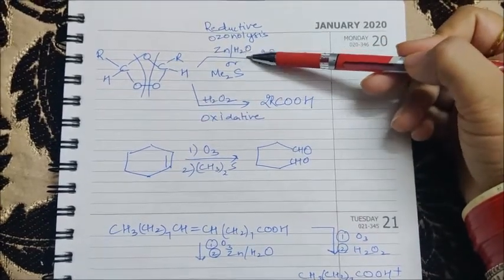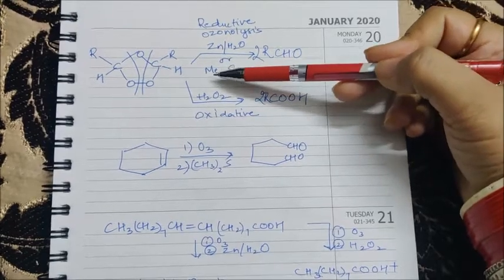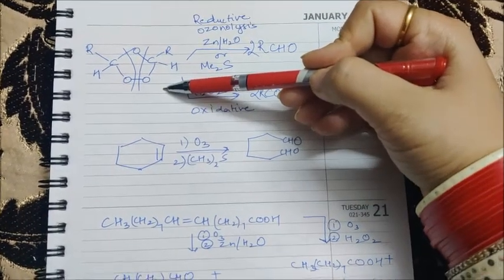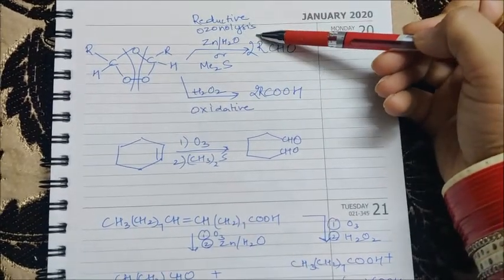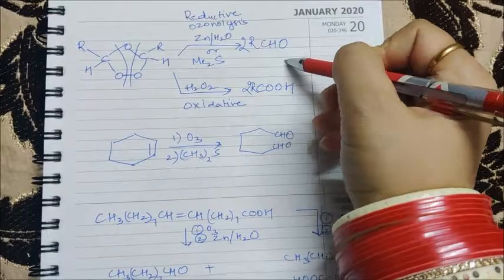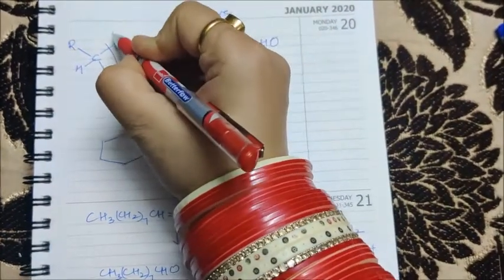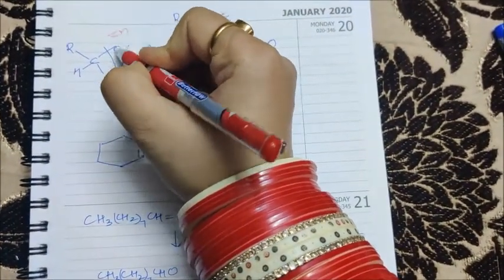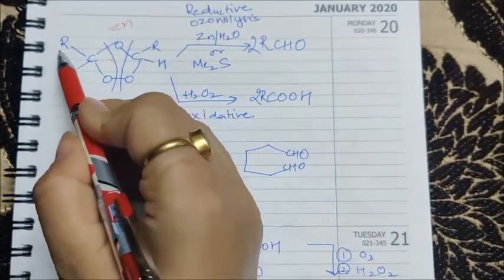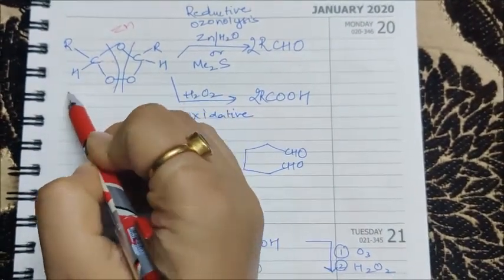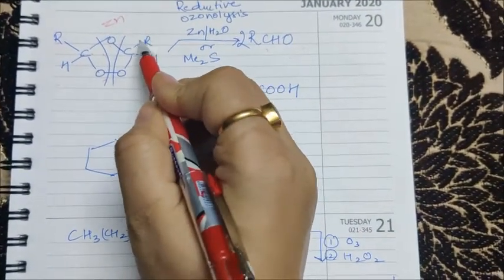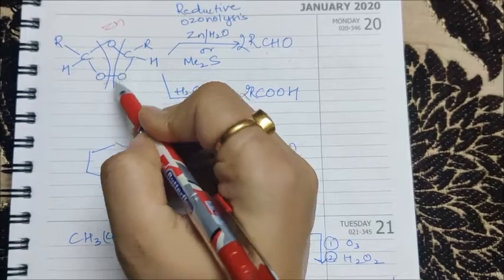If we are using zinc and water or Me2S, that is dimethyl sulfide, to break the ozonide, it is called reductive ozonolysis. It will break the ozonide into aldehydes. Zinc will take this oxygen and ZnO will be released. This will be forming R-C double bond O-H, that will be RCHO, and this also will be forming RCH double bond O. If instead of H this will be R, ketone will be formed.